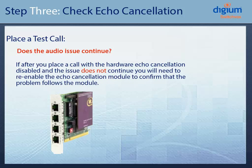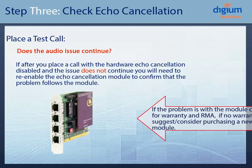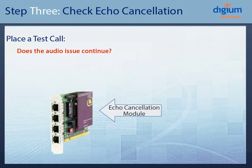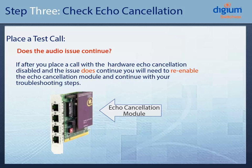After you have disabled the Echo Cancellation module, you will need to place a test call. If, after placing the test call, the issue doesn't continue, you will need to re-enable the Echo Cancellation module to confirm that the problem follows the module. If the problem is with the module, check for warranty and RMA the module. If there is no warranty, then you will need to consider purchasing a new module. If the issue does continue after placing the call with the hardware Echo Cancellation disabled, you will need to re-enable the Echo Cancellation module and continue with your troubleshooting steps.